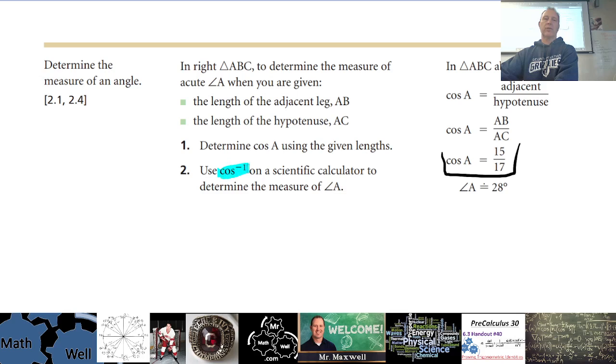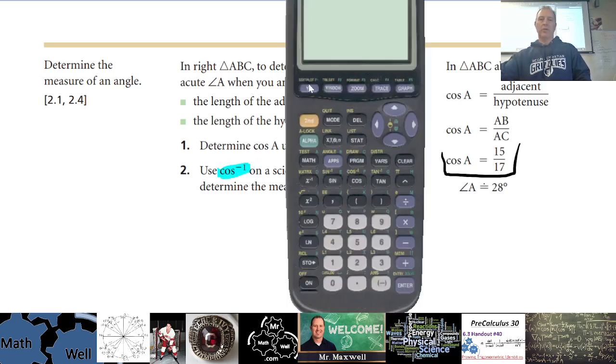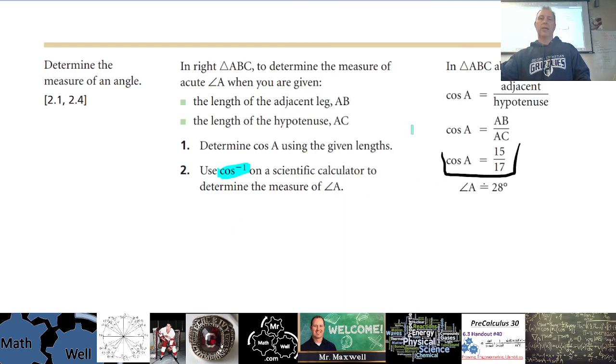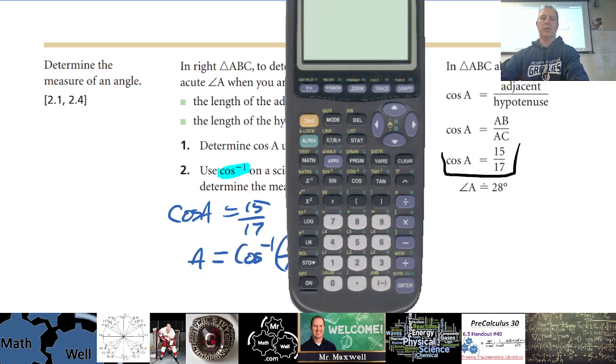Well, what we're reminded here is that we can use our inverse function of the trig function. So the cos to the negative one, and that will be your second function and then your cos button. So that's up there, it's cos to the negative one. And so you do cos to the negative one of the ratio. It's really easy. So if you have cos of A is 15 over 17, then A equals cos to the negative one of the ratio, 15 over 17. That's easy to do in your calculator.